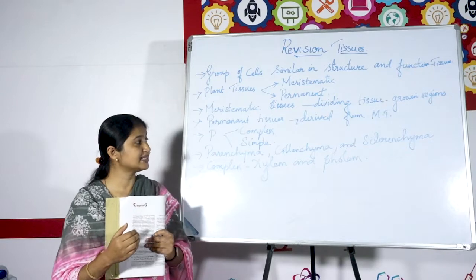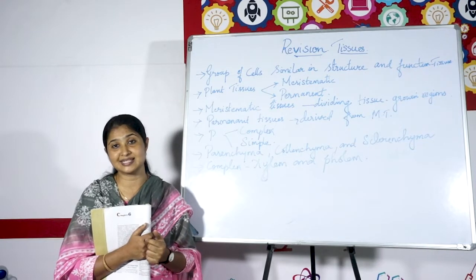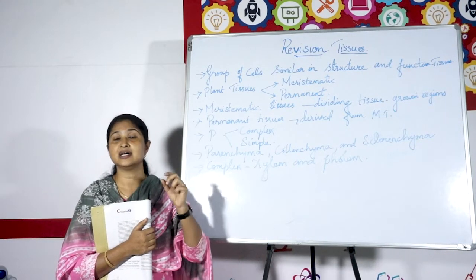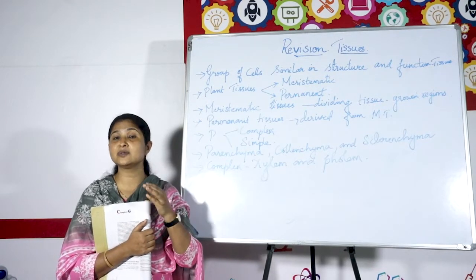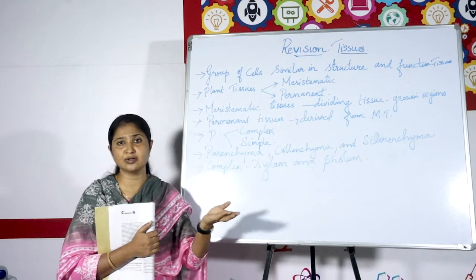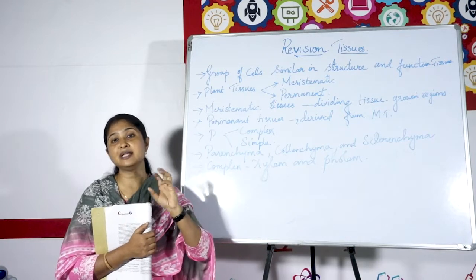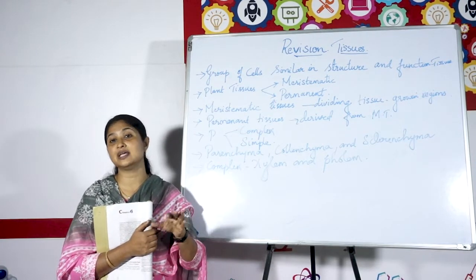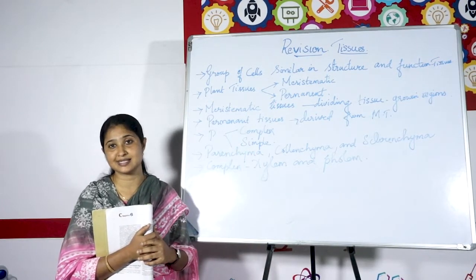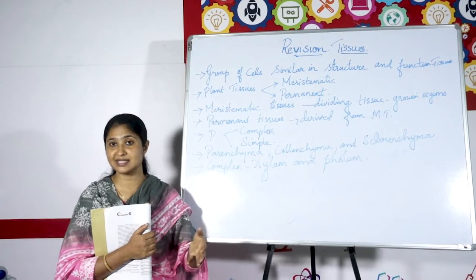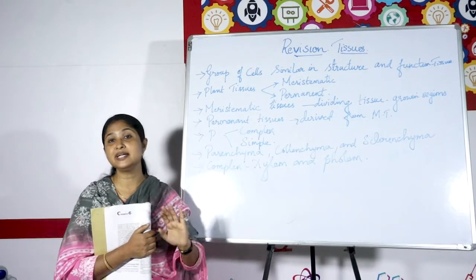Apart from these, there are also aerenchyma cells. These cells have air cavities in them. You can see water hyacinth floating on water — that is because it has air-filled parenchyma cells, giving it the ability to float. This is called aerenchyma. So parenchyma, collenchyma, sclerenchyma, and aerenchyma are the simple permanent tissues.